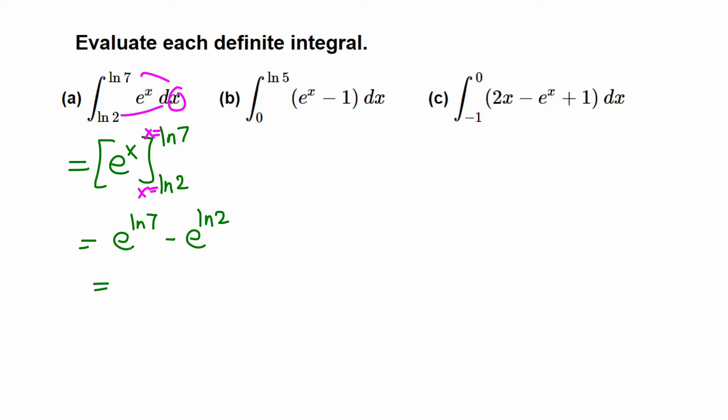This could be the final answer, but we can simplify. e raised to ln of some positive number is just that positive number, because e and natural log are inverse functions to each other. The functions cancel and just the number survives. That means in our case e and natural log cancel: 7 minus 2, which is 5.